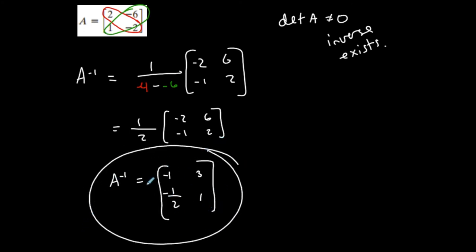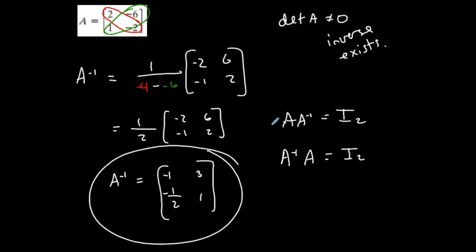You can always check and make sure that this inverse is correct, because the product of A and A inverse has to equal the 2 by 2 identity matrix, and this must hold in both directions. If these two products are both true, then they are in fact inverses. So that's how we find an inverse of a 2 by 2 matrix: 1 over the determinant times the matrix where you switch these elements and take the opposite of these. The determinant is this times this minus this times this.